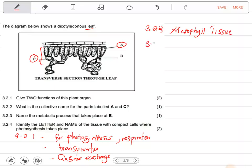Question 3.2.3: Name the metabolic process that takes place at B, here in that empty space. That is gaseous exchange.